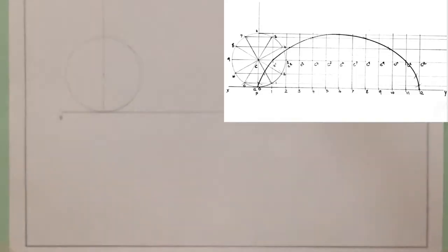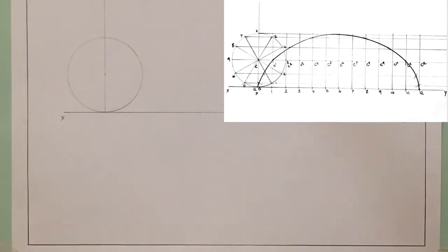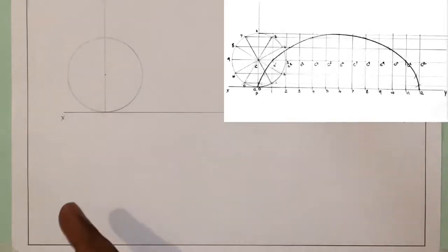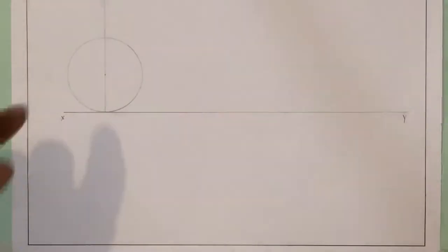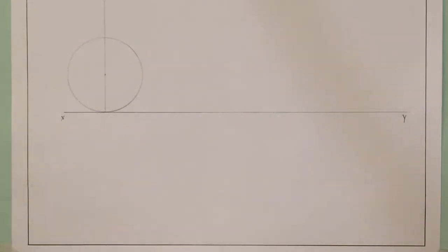The next step is I'm going to draw some parallel lines to my XY line — one from the top of the circumference of my circle and one from the center point of my circle.